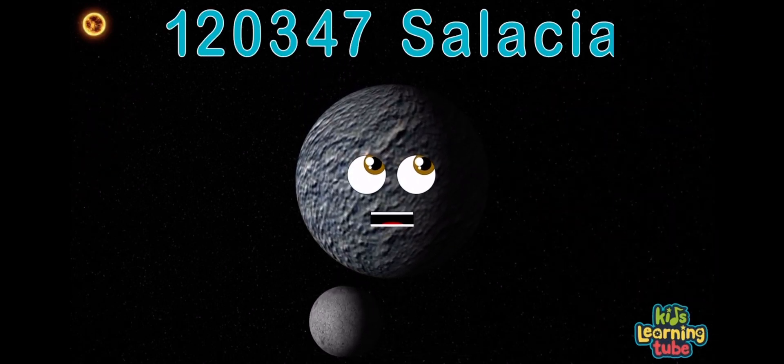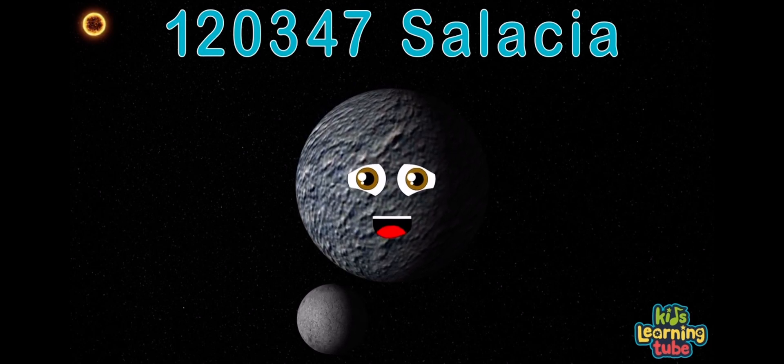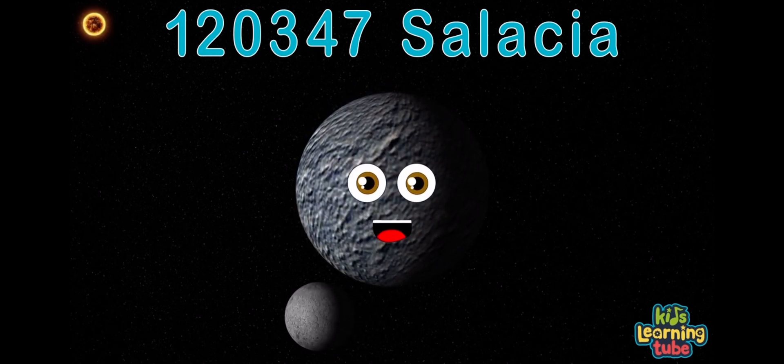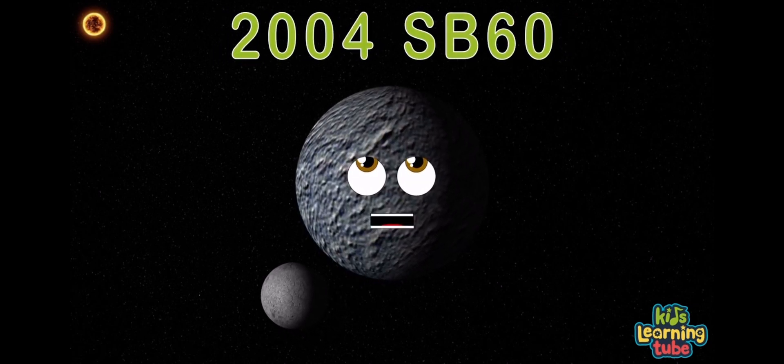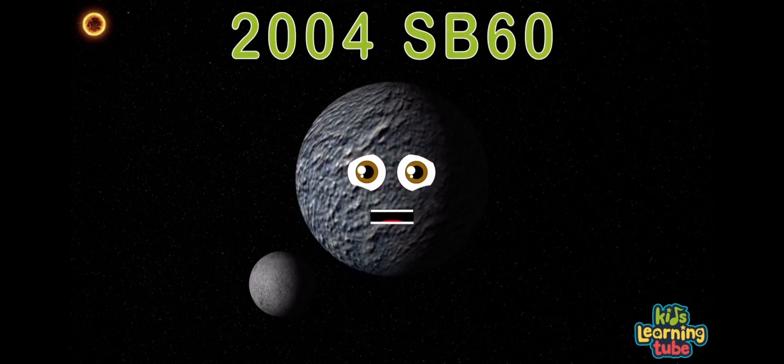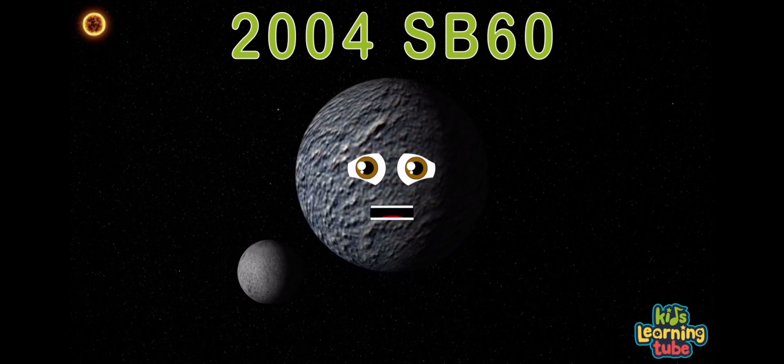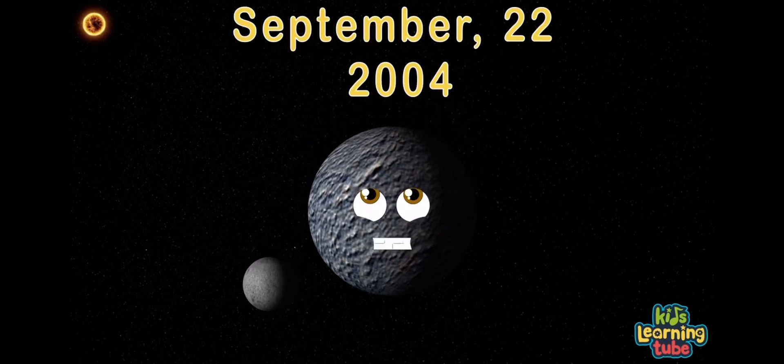120,347 Salacia, I'm a trans-Neptunian object, it's real nice to meet ya. My provisional designation is 2004 SB60. Listen to my song if you want to learn more about me. I was discovered on September 22, 2004.